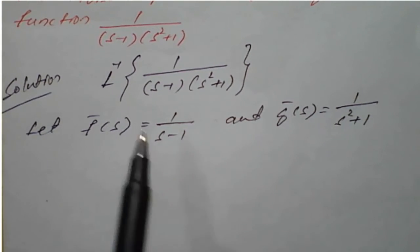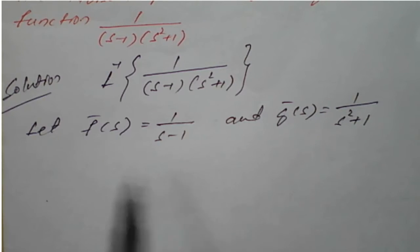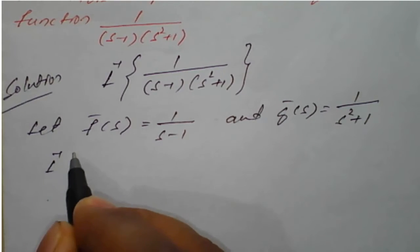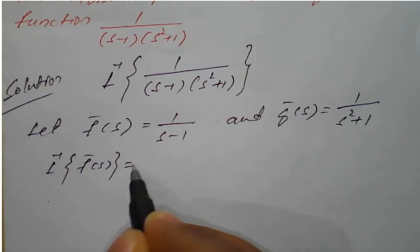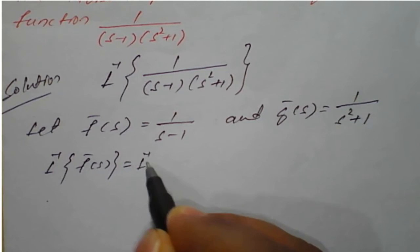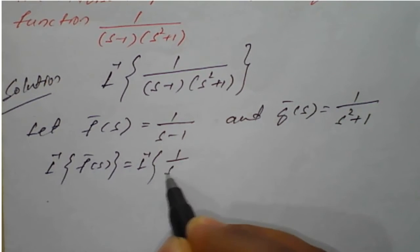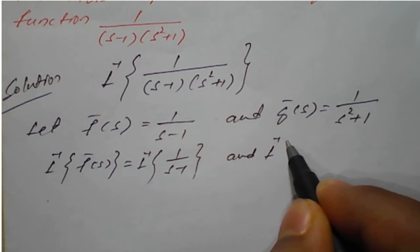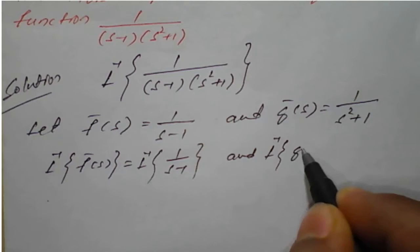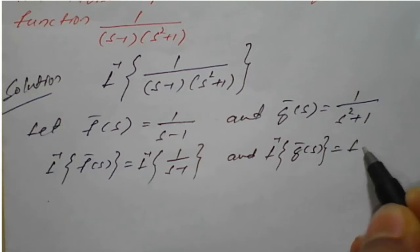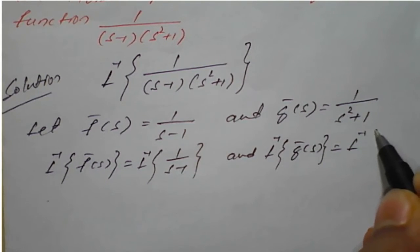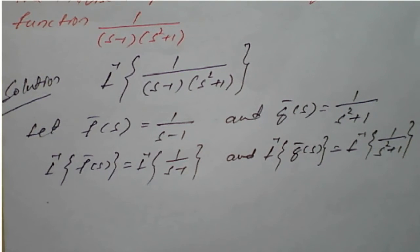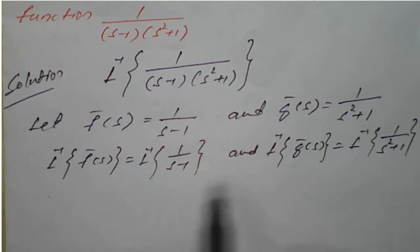Using these two functions f'(s) and g'(s), we will now find the inverse Laplace of each. Inverse Laplace of f'(s) equals inverse Laplace of 1 upon (s minus 1), and separately, inverse Laplace of 1 upon (s squared plus 1). Once we get both results, we need to simplify.